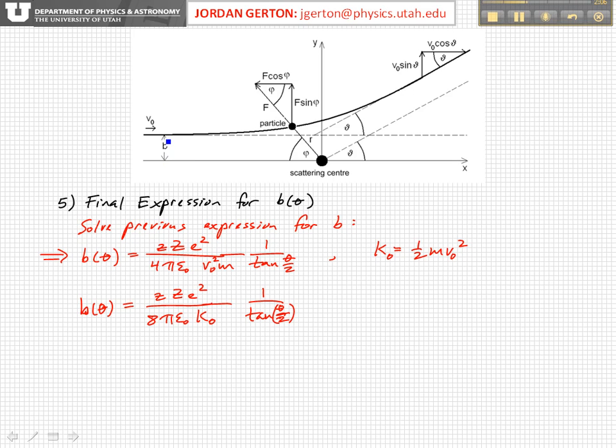Okay, and so a particular impact parameter B will map to a sort of a circle of equal thetas relative to the initial direction if the incoming particle is in a different plane. Okay, so in any case, there's a one-to-one relationship between B and theta, which means that a particular particle would be scattered to a particular theta, depending on its initial impact parameter.